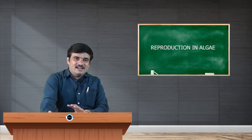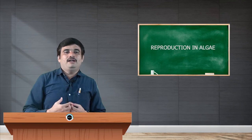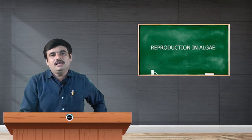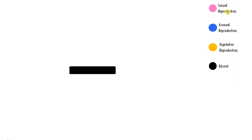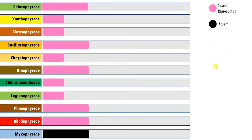Now let us associate these different modes of reproduction across the 11 classes of algae. I have represented some key characters using color codes: sexual reproduction is depicted in pink, asexual reproduction in blue, and vegetative reproduction in orange. If any kind of reproduction is absent, it is represented in black. The extent of the box represents the preferred mode. For example, Chlorophyceae, Bacillariophyceae, Dinophyceae, Phaeophyceae, and Rhodophyceae show sexual mode as their most preferred mode of reproduction.